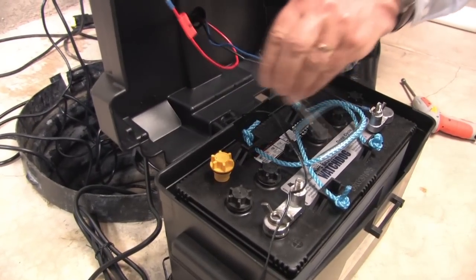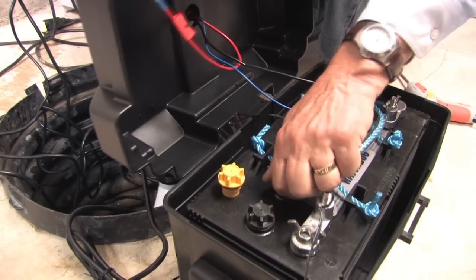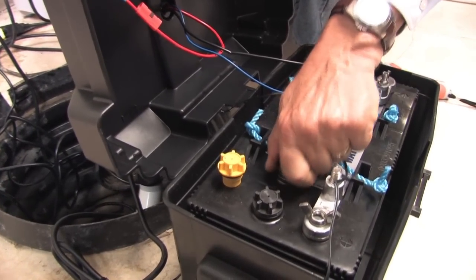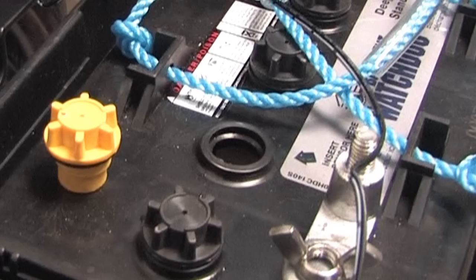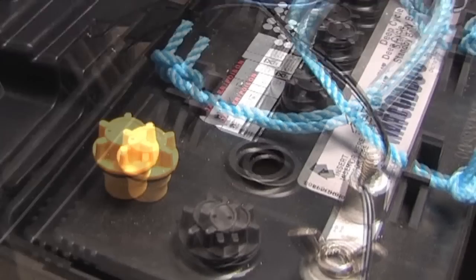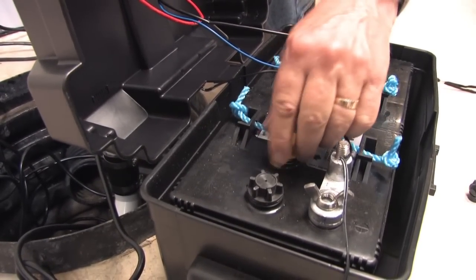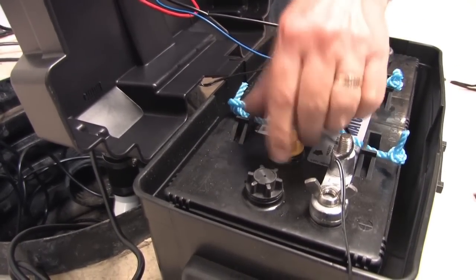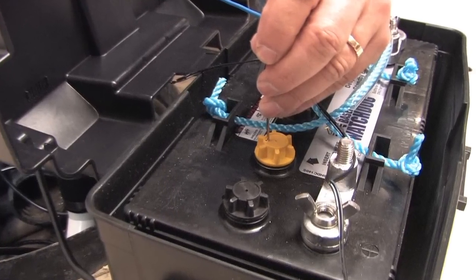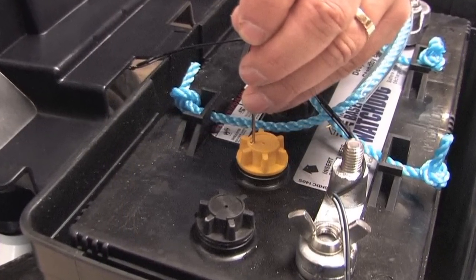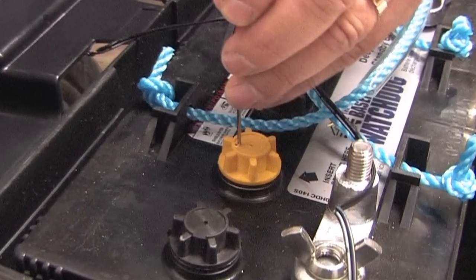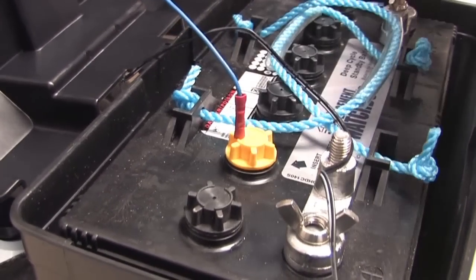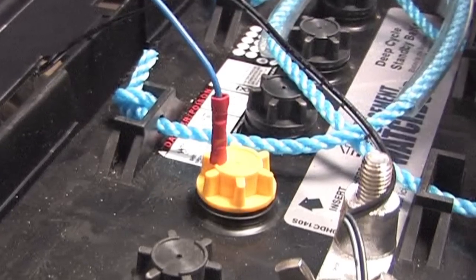To install the fluid sensor in the battery, remove the battery cap from the second cell from the positive post. An arrow on the top of the battery marks this position. Replace it with the yellow cap that's provided in the basement watchdog package. Insert the fluid sensor in the hole that is off center on the top of the cap. Hold the sensor straight and press it firmly into the hole all the way up to the connector. Do not bend the sensor rod.